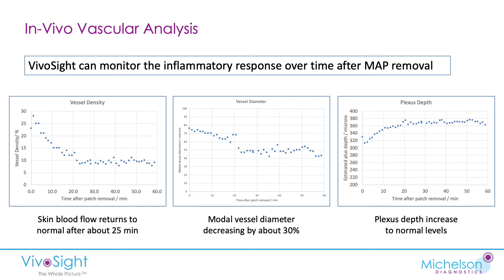Here are some charts from repeated scans over a 60-minute period. From a peak of 30 to 40% density immediately after patch removal, it took about 20 to 25 minutes to return to a stable 10%. Likewise, vessel diameter started at 75 microns and then subsided to a more normal level in the mid-forties after about 25 minutes. Similarly, the depth of those shallow activated vessels returned to normal over that period. This series of charts gives us an insight into the inflammatory response post removal of the patch.